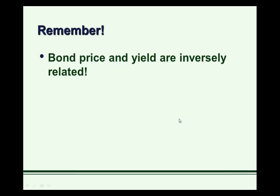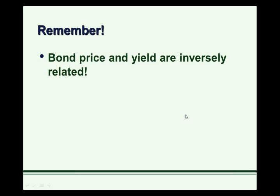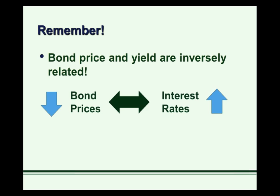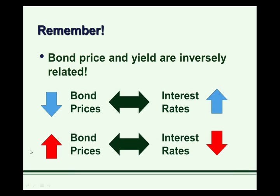Remember, when looking at bond markets, bond price and yield are inversely related. So anything that happens to bond price will push the yield in the opposite direction. Lower bond prices mean higher yields, or in other words a higher interest rate. Higher bond prices mean a lower yield, or a lower interest rate.